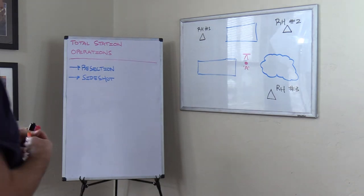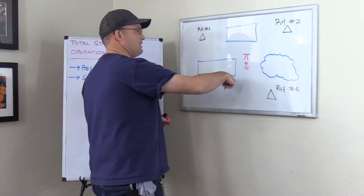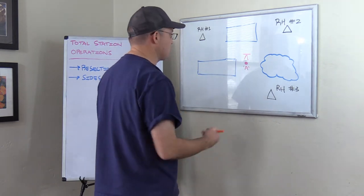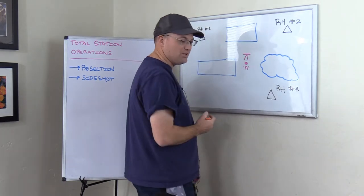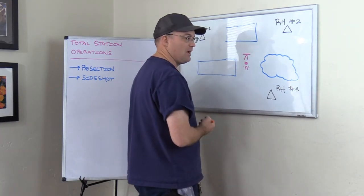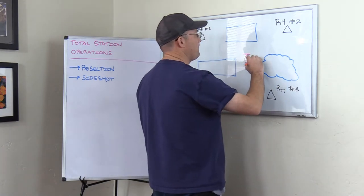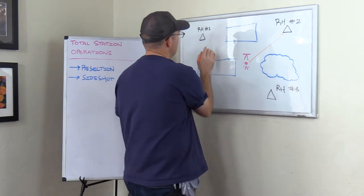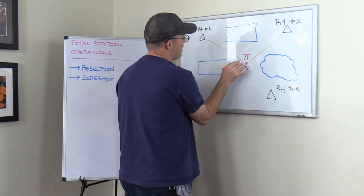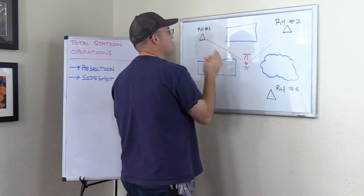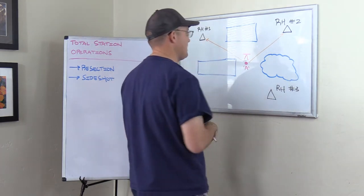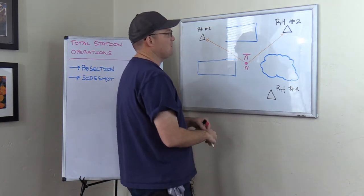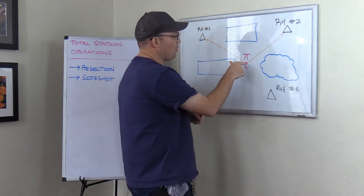So what is a resection? In a resection, you set up over a new point that doesn't have a coordinate value, and you shoot two known points to calculate the coordinate at your setup point. So you set up on A, go into the resection routine in your total station, and the first thing it's going to tell you is shoot your first point. So you shoot RH2, then it says shoot your second point — you shoot RH1. The order doesn't matter; you can shoot one and then two or two and then one. The software onboard the total station and the data collector is going to calculate the coordinate for A.